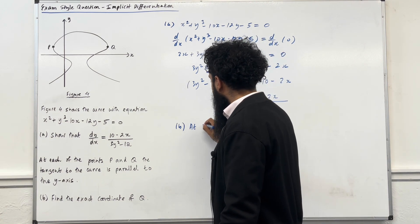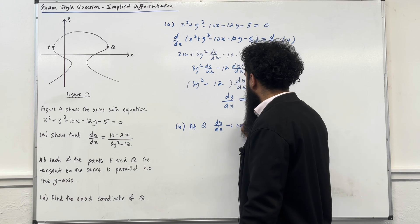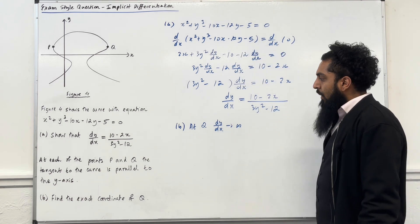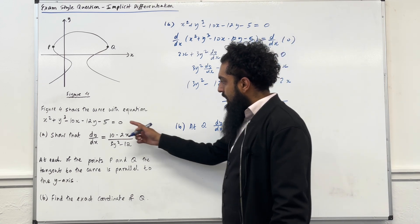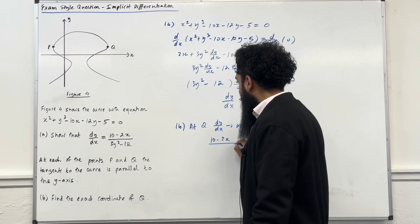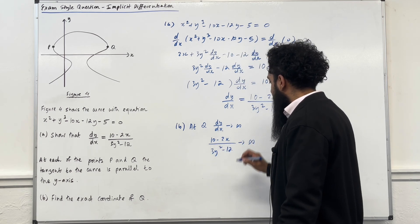So at Q, dy over dx tends to infinity. The same applies for at the point P. So we have that, this fraction, 10 minus 2x over 3y squared minus 12 tends to infinity.